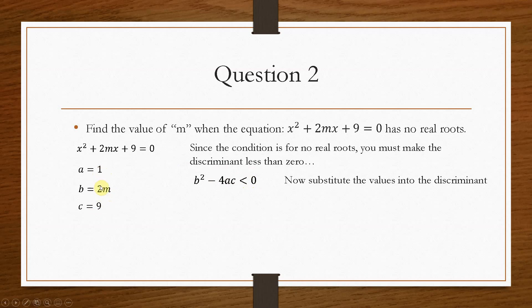And that gives us the relationship in order to be able to manipulate the equation for m. So we substitute in a, b, and c, and we end up with 4m squared minus 36 is less than zero.